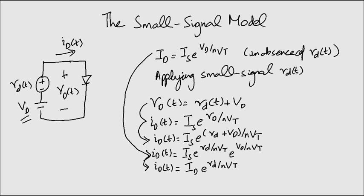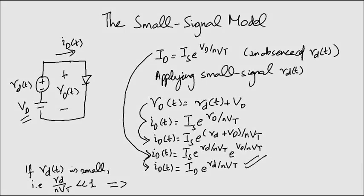Now if the amplitude of the signal VDT is kept sufficiently small such that VD over NVT is much smaller than 1, then we may expand the exponential of this equation in a series and truncate the series after the first two terms to obtain the approximate expression ID into 1 plus VD over NVT.